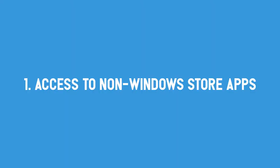Let's have a look at some important features that differentiate the three versions. First: access to non-Windows Store apps. On Windows 10 S, you cannot download third-party applications, whereas you can on the other two versions. However, native Windows Store applications can be downloaded on all three versions of Windows 10.